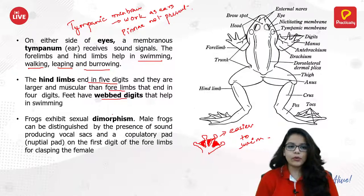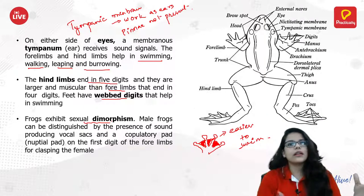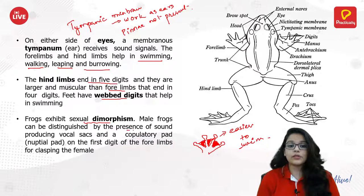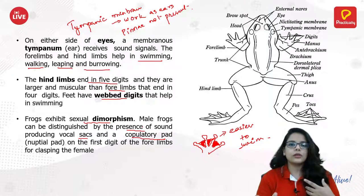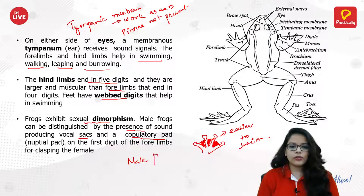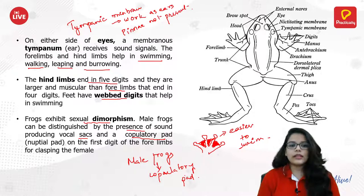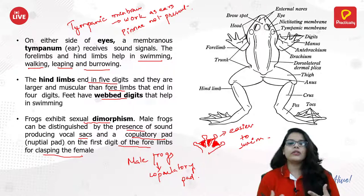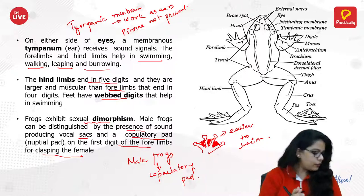Frogs exhibit sexual dimorphism — males and females have different characteristics. The male frog can be distinguished by the presence of sound-producing vocal sacs and a copulatory pad. The copulatory pad is located on the first digit of the forelimbs and is used for clasping the female during mating. This structure is not present in female frogs.